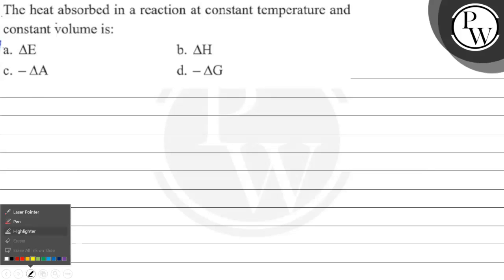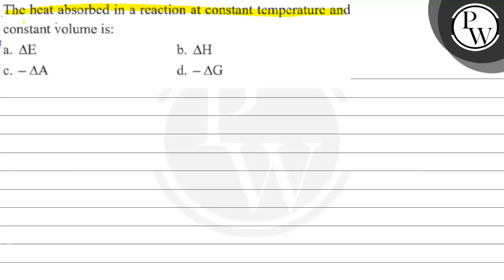Hello, let's read this question. The question says, the heat absorbed in a reaction at constant temperature and constant volume is option A, delta E, option B, delta H, option C, minus delta A, option D, minus delta G.